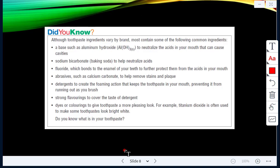Fluoride is used to bond to the enamel of the teeth to further protect them from acids in the mouth. Abrasives like calcium carbonate remove any stains and plaque. There's also detergents. These create the foaming action when you're brushing and prevent it from running out while you're brushing. There's also strong flavorings to cover the taste of detergent. And then there's dyes, colorings to give it a more pleasing look. An example is titanium dioxide, it's used to make toothpaste look bright white.